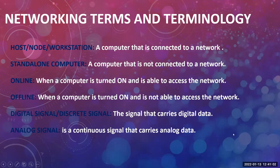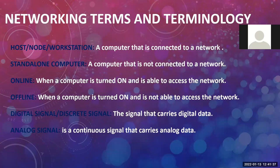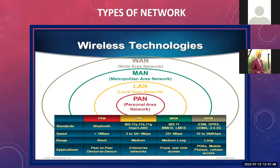An example of MAN is a cable network or Fastway network — computers connected within a city. Computers connected within a building is called LAN. Computers connected all over the globe without any geographical limits is called Wide Area Network (WAN). Examples of WAN include the internet and ATM machines. When you connect your personal devices to each other to share or transfer data, that is called PAN — Personal Area Network.